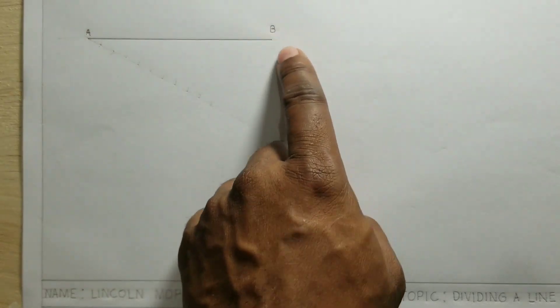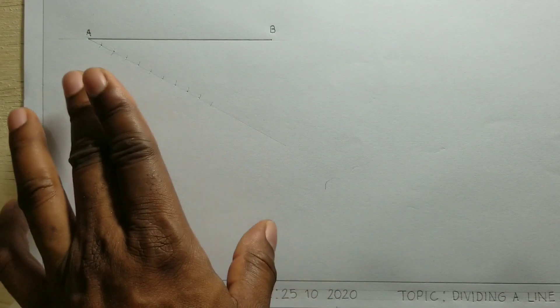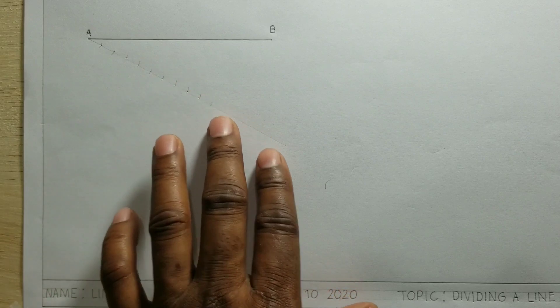Now if you had wanted to divide the line AB into 8 equal parts, then you would have to make 8 marks or 8 arcs on this line. Now please note that when we were making the arcs, we did not move the compass at all. So the compass should remain in the position that you had set it before.